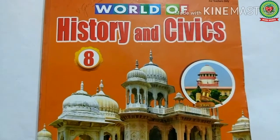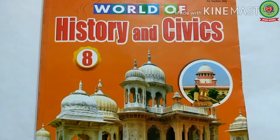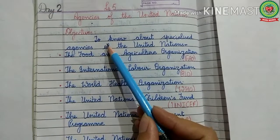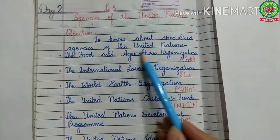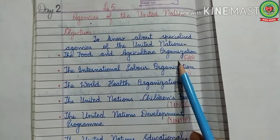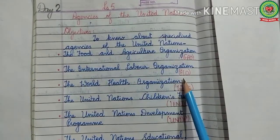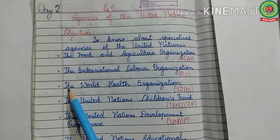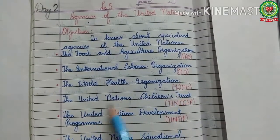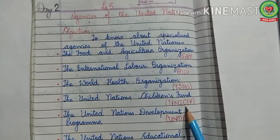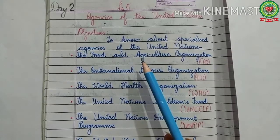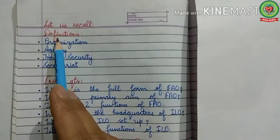Hello everyone, open your History and Civics book, Class 8, Lesson 5: Agencies of the United Nations. The main objective of the lesson is to know about specialized agencies of the United Nations. Earlier we discussed the Food and Agriculture Organization (FAO) and the International Labor Organization (ILO). Today we are going to discuss the World Health Organization (WHO) and the United Nations Children's Fund (UNICEF).